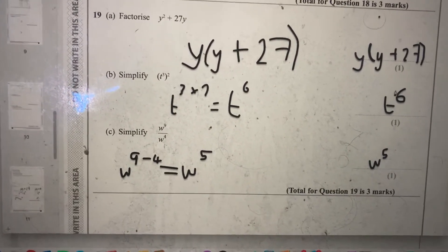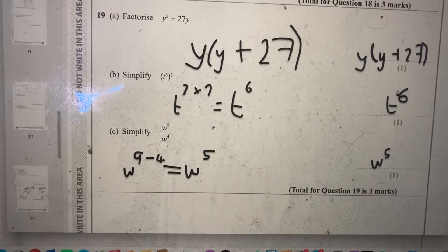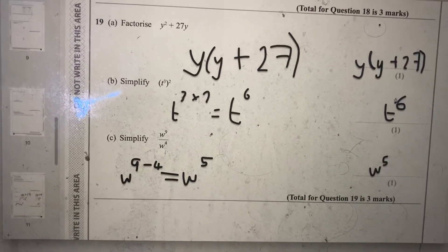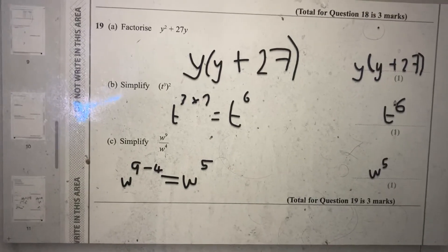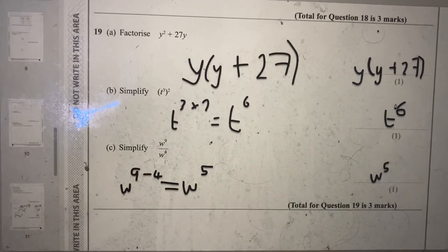Part c, simplify w to the power of 9 divided by w to the power of 4. So when I'm dividing indices, I subtract the powers. So it's 9 minus 4, which is w to the power of 5.